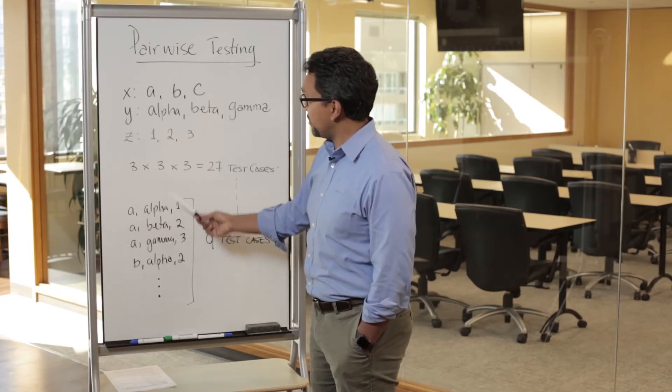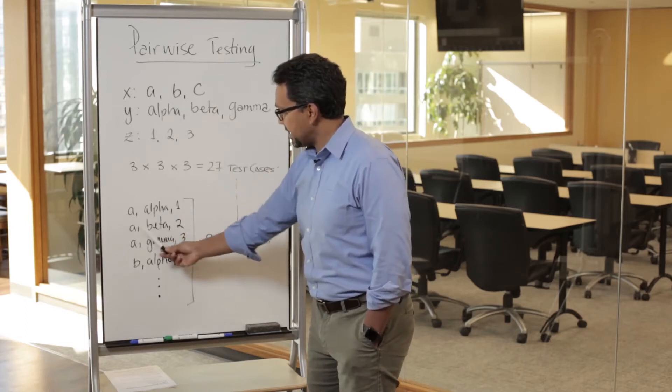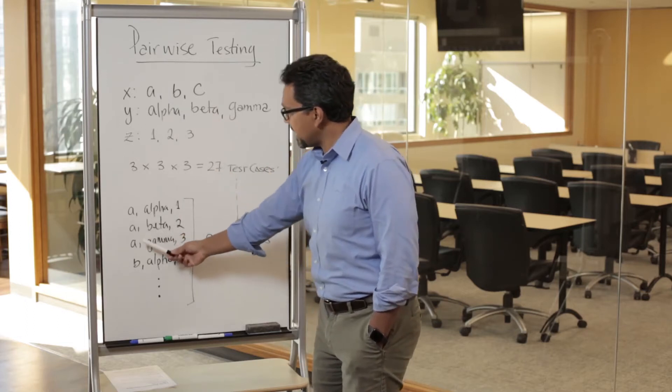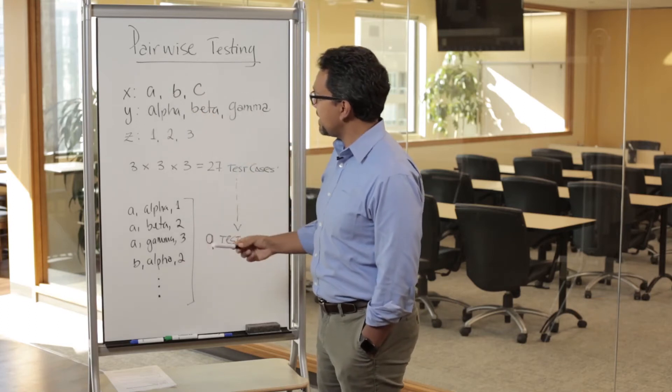Now you can have another scenario where you go A, beta, and two. So now we're going to be testing two other pairs, and I keep going like this. I can start combining now A with gamma and three, and at some point I could start basically taking another instance of this factor. Now we're taking B, so maybe I'm testing now iOS or macOS.